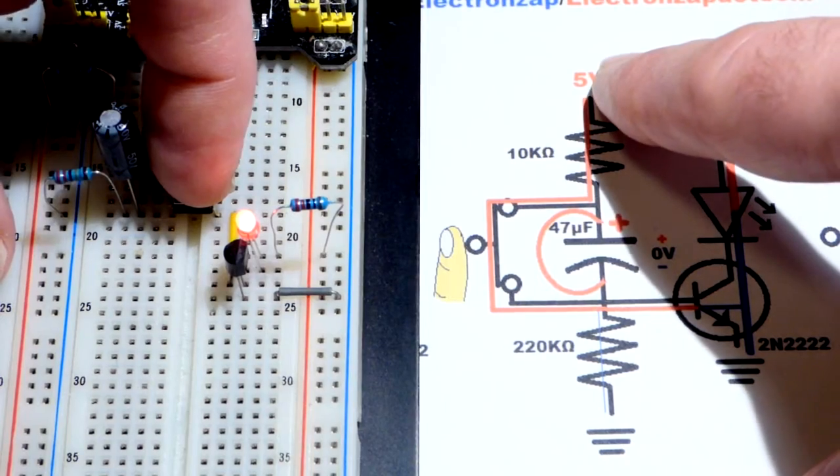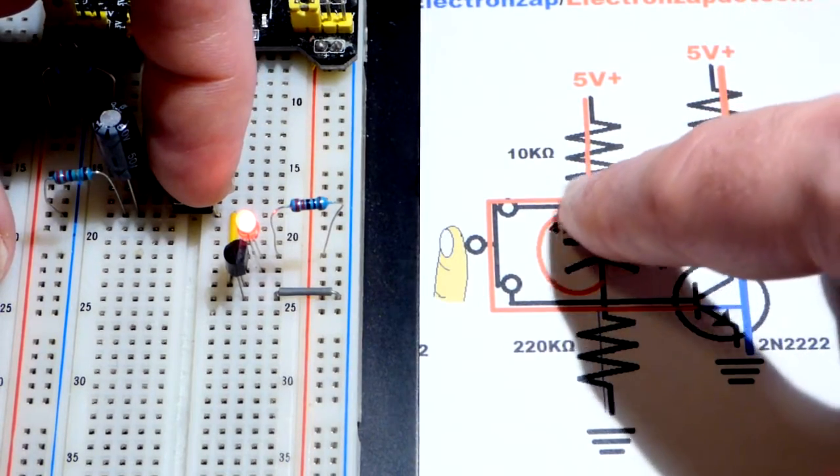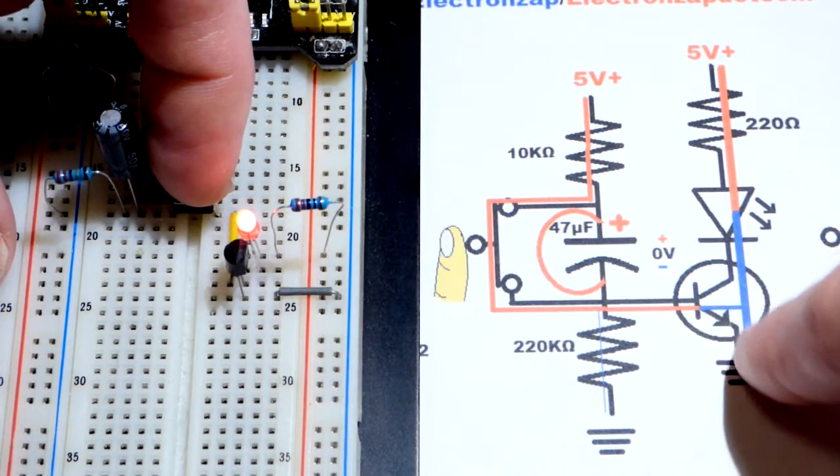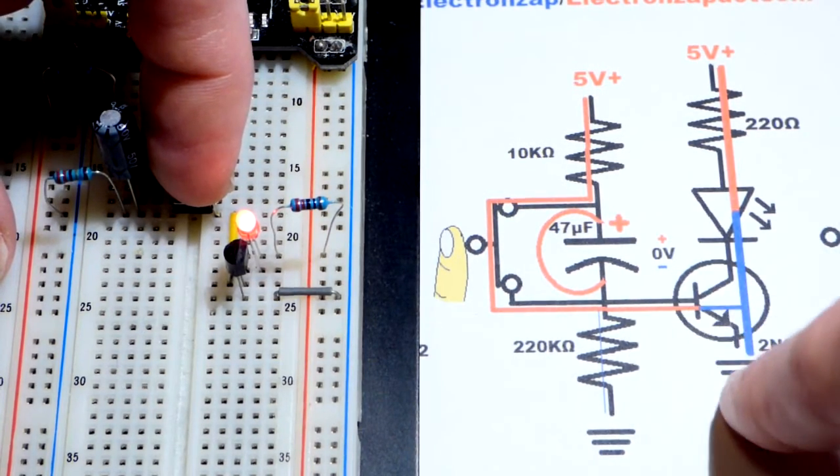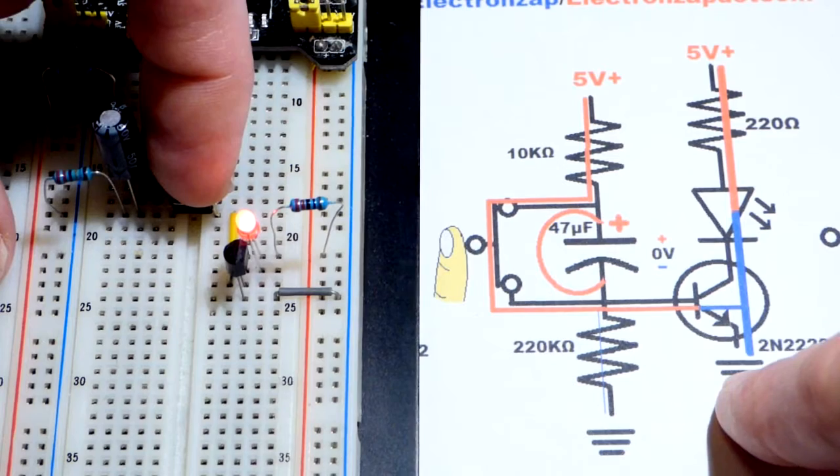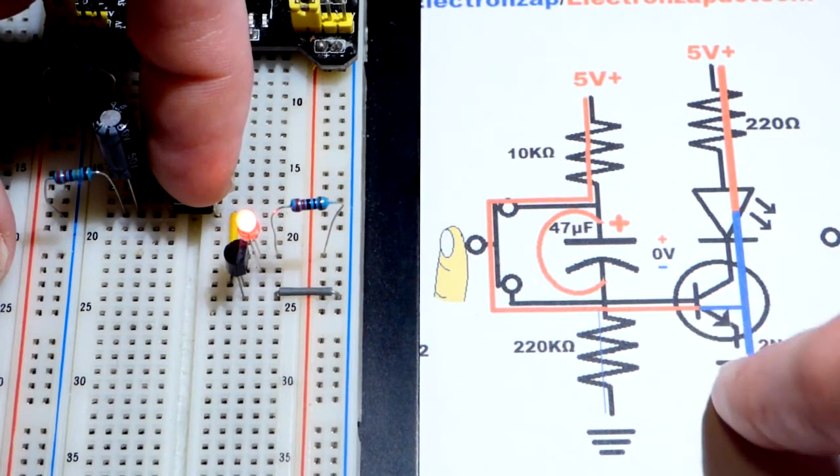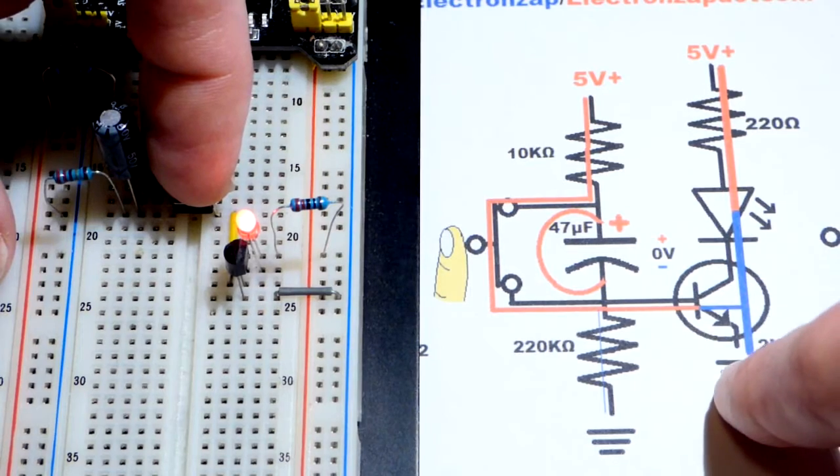A lot of people get upset when you talk about current flow and electron flow. And unfortunately we're stuck with two systems. Positive going to negative or negative going to positive. But in any case, let's get to it. So I'm pressing the switch.